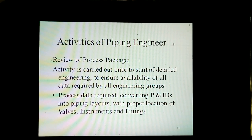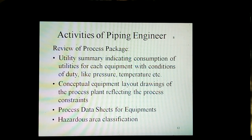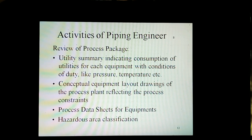Activities of the Piping Engineer include review of process package. This activity is carried out prior to the start of detailed engineering to ensure availability of all data required by all engineering groups. Process data required includes converting P&IDs into piping layouts with proper location of valves, instruments, and fittings. Review of process package includes utility summary indicating consumption of utilities for each equipment with conditions of duty like pressure, temperature, etc. Also included are conceptual equipment layout drawings of the process plant reflecting process constraints, process data sheets for equipment, and hazardous area classification.